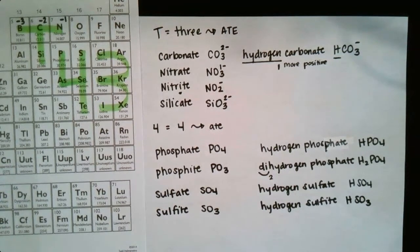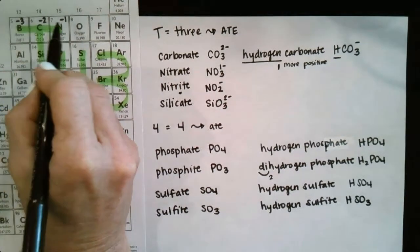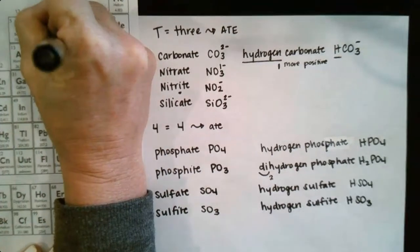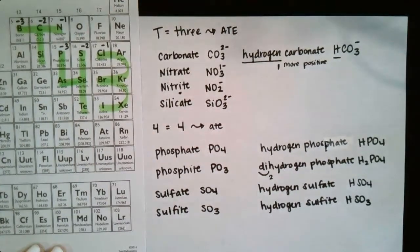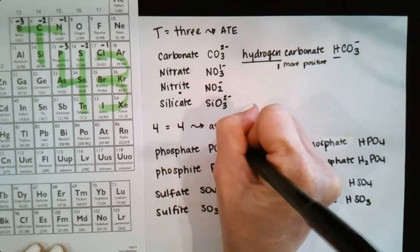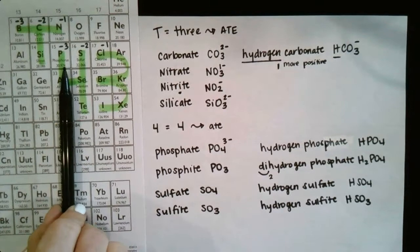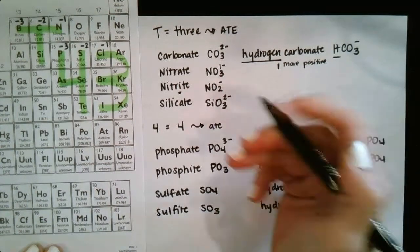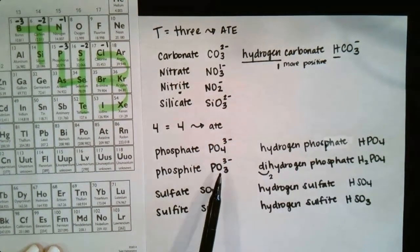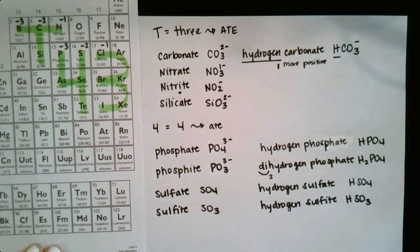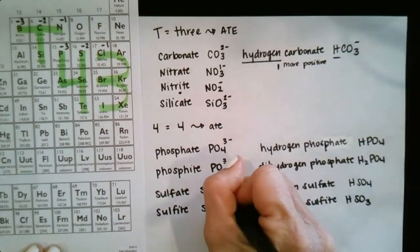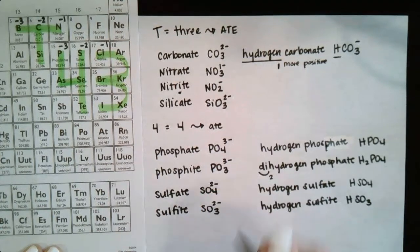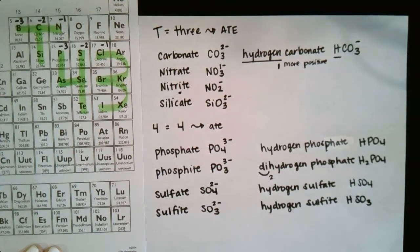And then for their charges, this does the same thing. We go minus 1, minus 2, minus 3 up here, and then on our next row we start again. Minus 3, minus 2, minus 1, like that. PO4 is 3 minus, because it's in this row, and so is PO3, 3 minus. So when we change the number of oxygens, it does not change the charge on our polyatomic ion. Sulfur is in the negative 2 column, so this is minus 2, 2 minus, and also 2 minus.